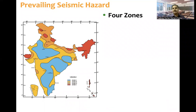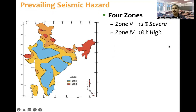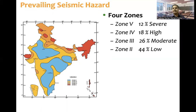Looking at the zone-wise area classification, 12% of area belongs to severe earthquake-prone areas, that is zone 5. 18% belongs to zone 4. 26% belongs to zone 3, that is moderate. And zone 2 has 44% of land area in the country. So around 56% of land is prone to moderate to severe earthquake events.